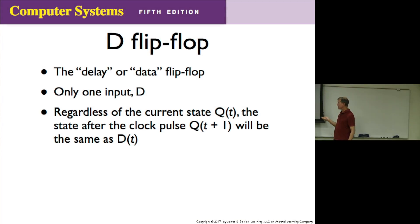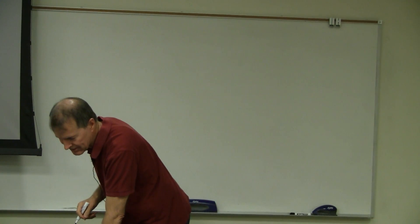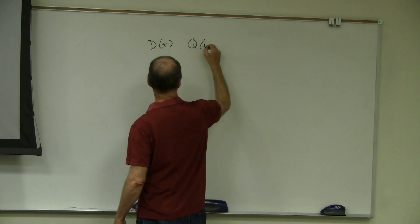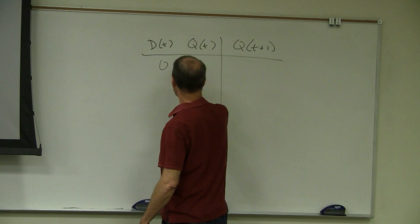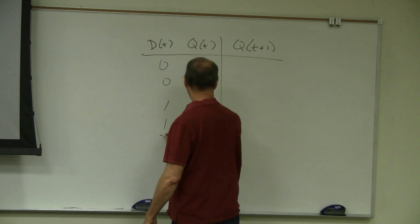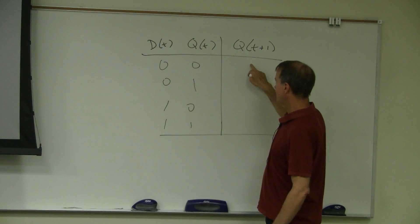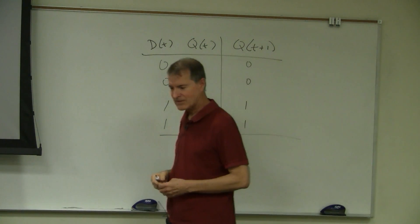So here are the characteristics of the delay or data flip-flop. Only one input D, and regardless of the current state Q at time T, the state after the clock pulse Q at time T+1 will be the same as D at time T. Let's do our characteristic table: D at time T, Q at time T, Q at time T+1. The entries are: 0,0→0; 0,1→0; 1,0→1; 1,1→1. Does everybody see how that works?